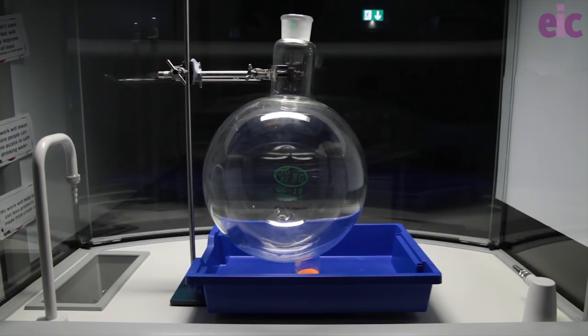CLEAPS actually recommend a 1-litre conical or round-bottomed flask, but I don't have one of those to hand, so I've used one of my giant round-bottomed flasks.